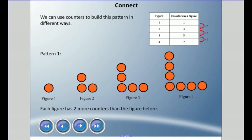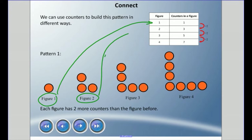This is pattern one. You can see figure one — I'll circle that — and figure one has one counter. When we get to figure two, there are three counters. Figure three has five counters, and figure four has seven. So each figure has two more counters than the figure before it.